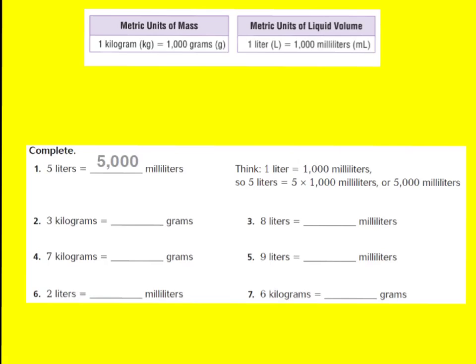So let's look at our first example. Our first example says 5 liters equals how many milliliters? I'm going to make one line to signify 1 liter, 2 liters, 3 liters, 4 liters, 5 liters.